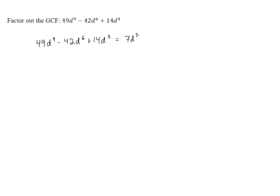Now that we've found our greatest common factor, 7d cubed, we want to see what the leftovers are going to be. If we start with 49d to the 9th and we pull out a 7d cubed, 49 divided by 7 is 7.